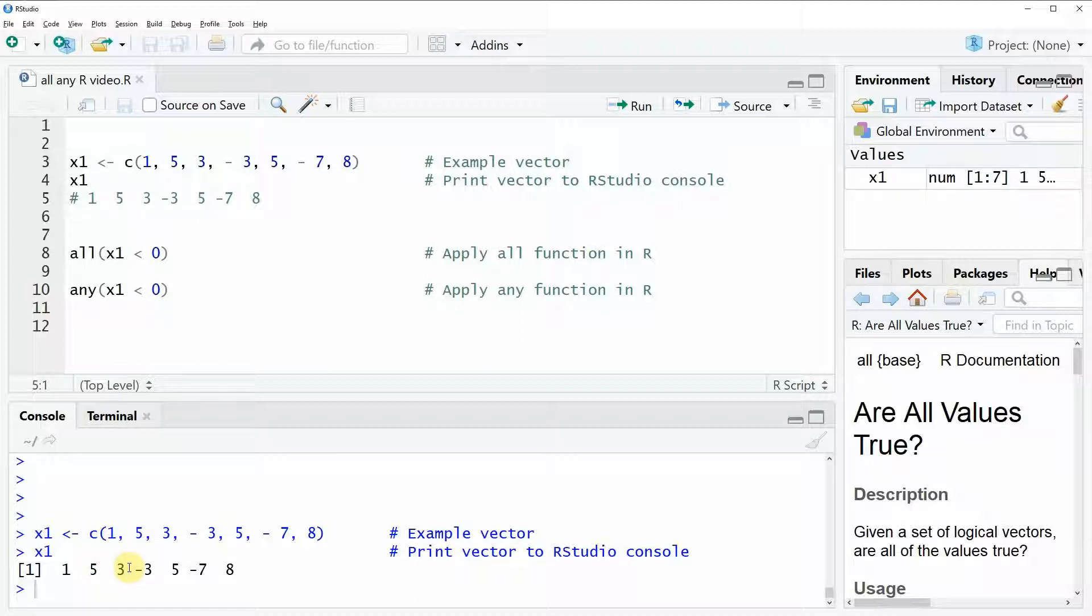For example we now might want to know if all values in this vector are smaller than zero and this is something we could check with the all function. If you have a look at line 8 of our code you can see that we can apply the all function by simply writing all and then within the parenthesis of this function we can specify a condition.